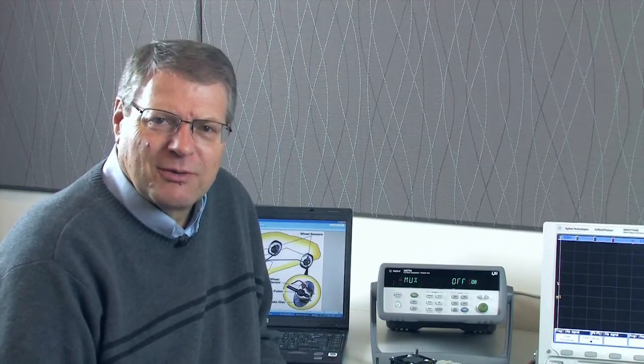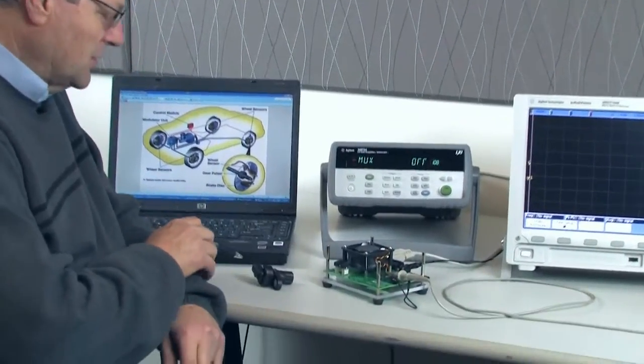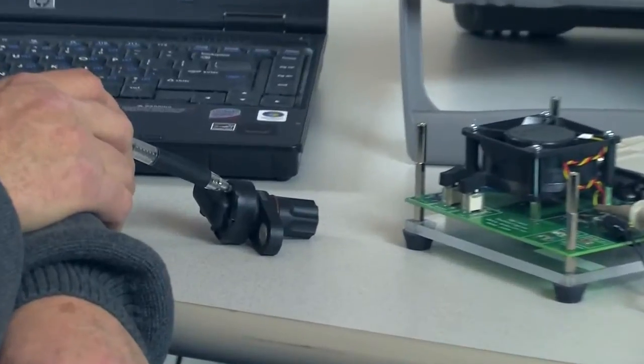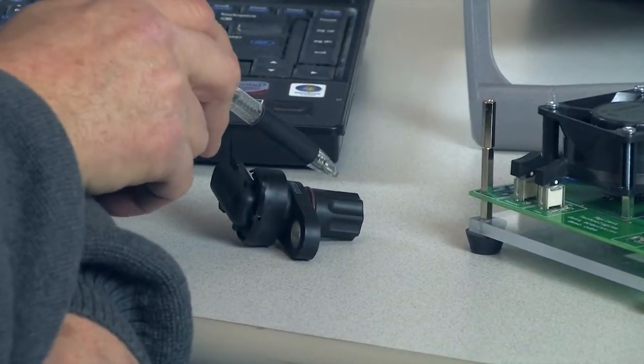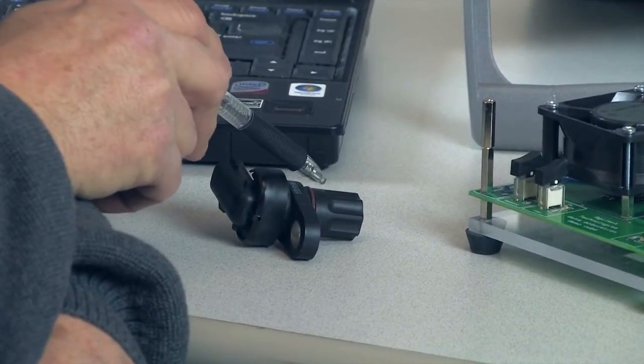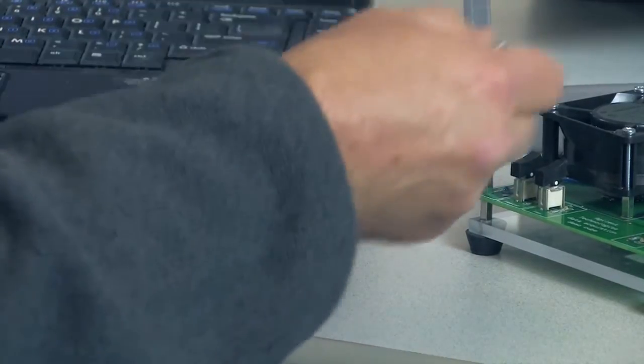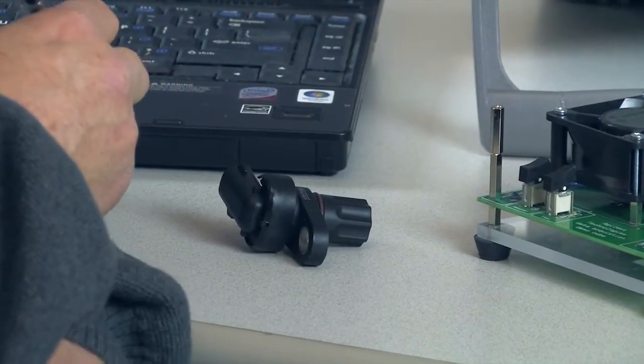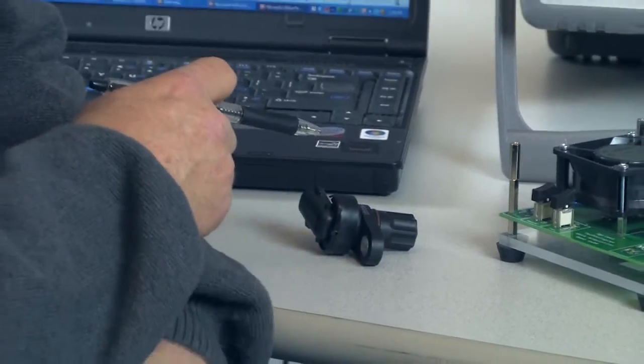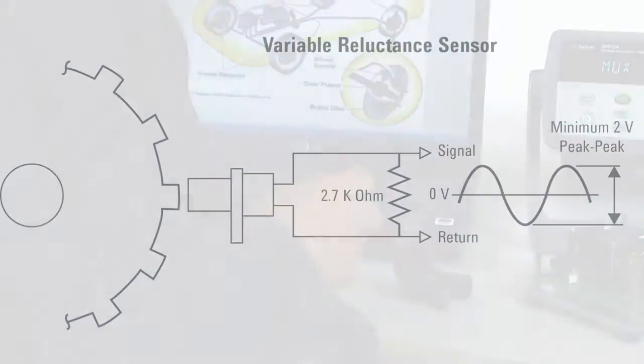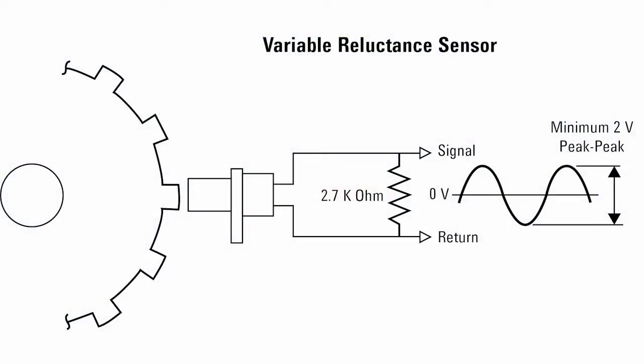So first let me talk about the sensors that are used. One of the most common ones is a variable reluctance sensor or VRS. Essentially this is just a small coil wound inside of here, and this is set up against a ferrous rotating plate, maybe a cog wheel on a car or something like that. As the magnetic thing passes, it'll actually induce a little pulse inside the coil, which you can then measure.